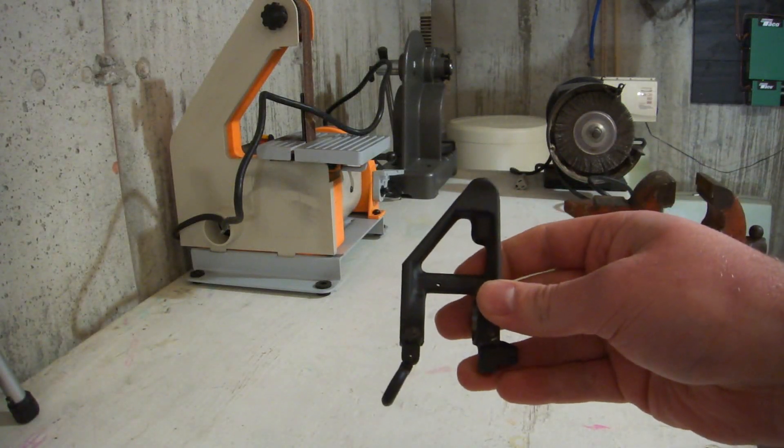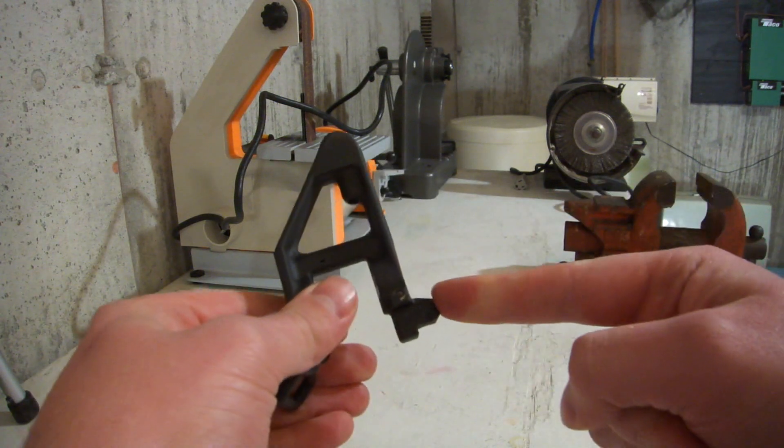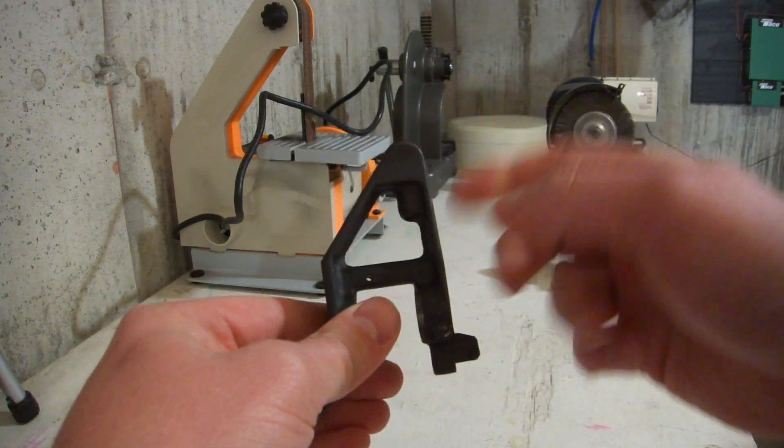So I've got this spare front sight base from an AR-15. It's got an integrated gas block, swing swivel, bayonet lug, and front sight tower.